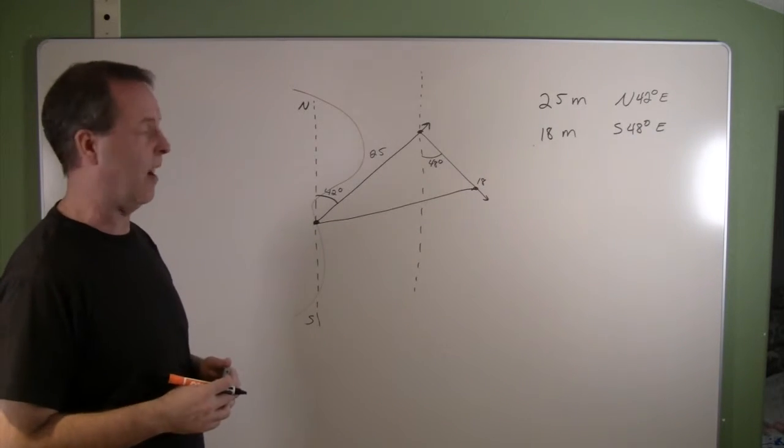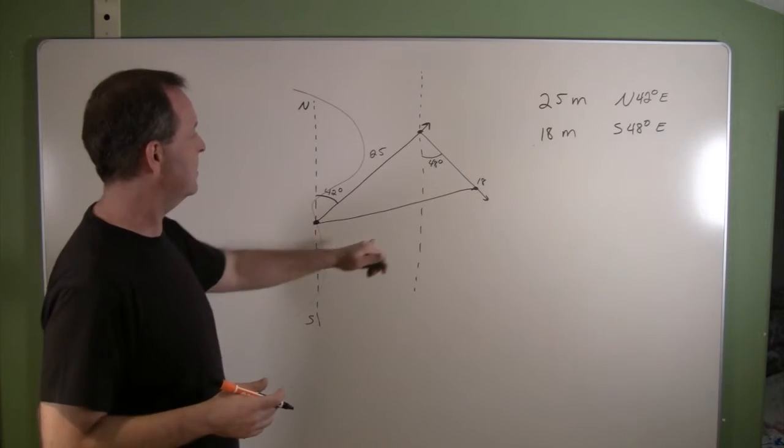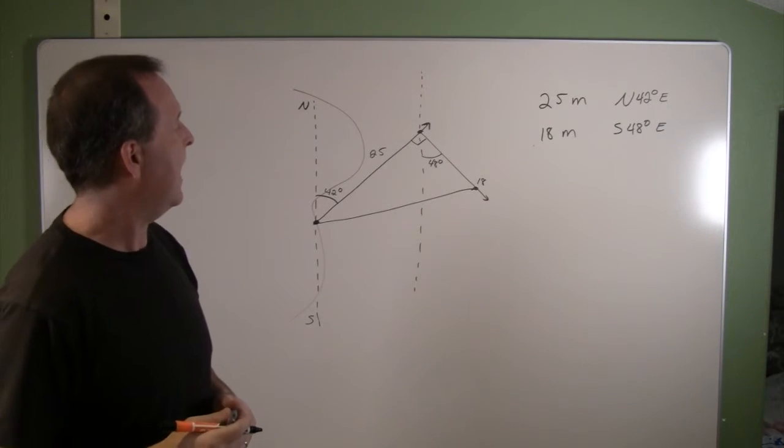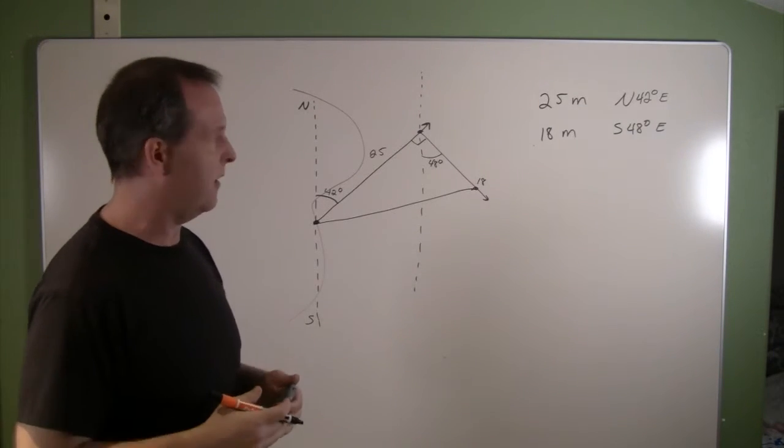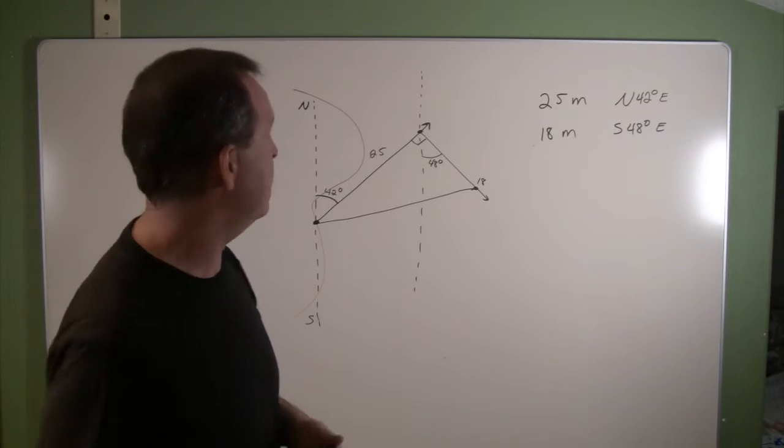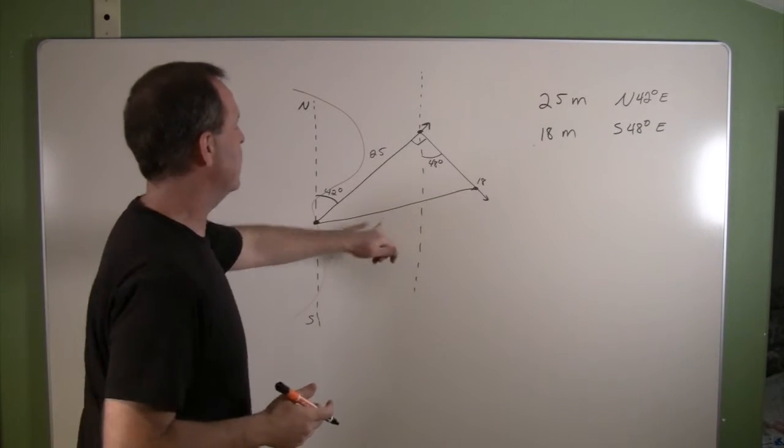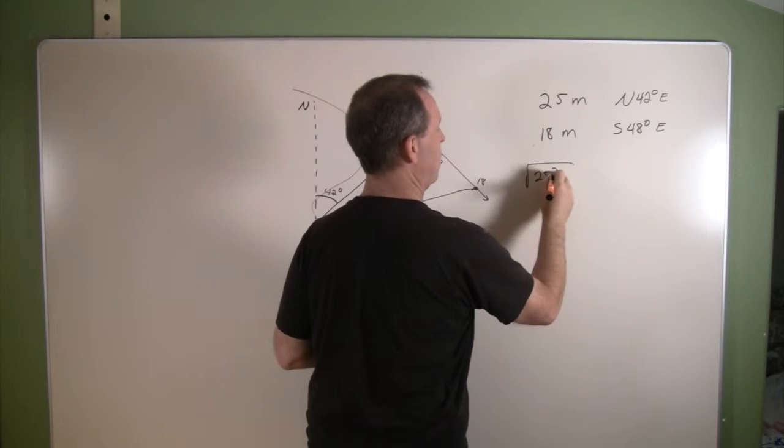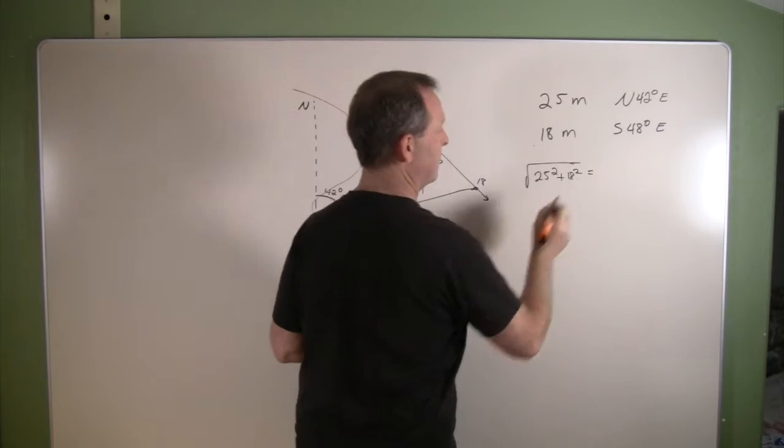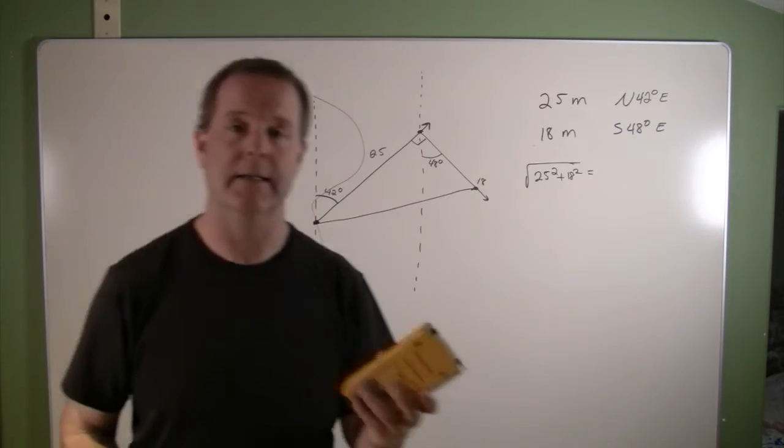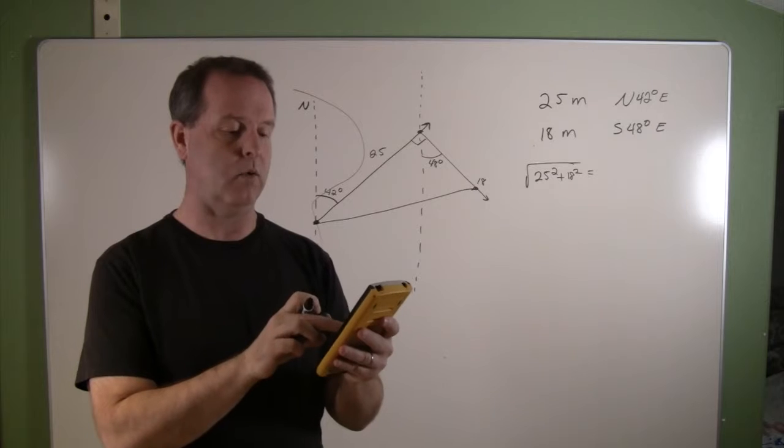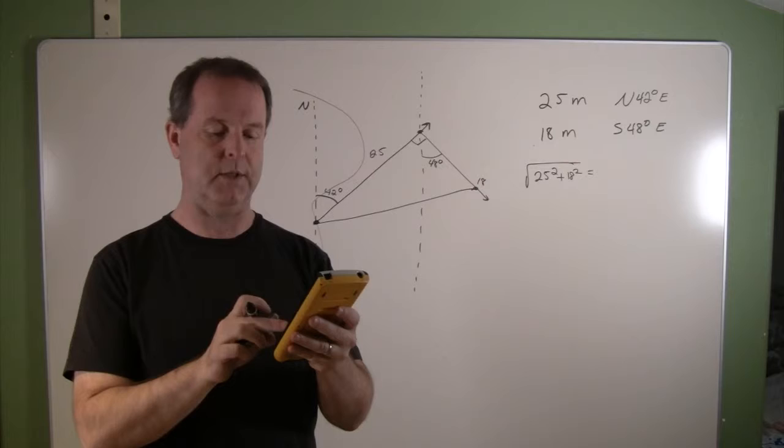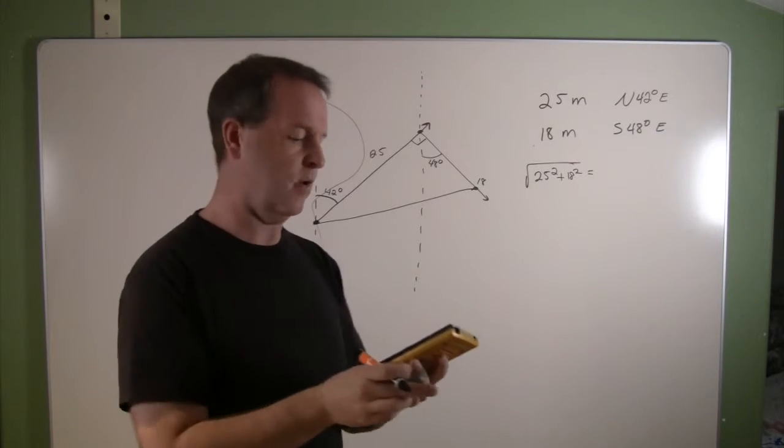A couple things I can do: I know I have a right triangle, and with having that right triangle right there I can go ahead and use Pythagoras to figure out what the side is. That's the square root of 25 squared plus 18 squared. I'm going to use my calculator for that. 25 squared plus 18 squared gives me 30.8.